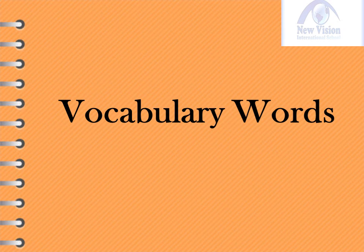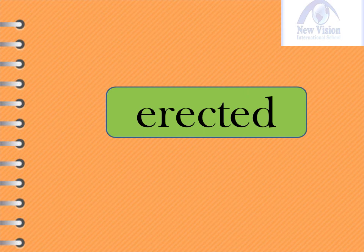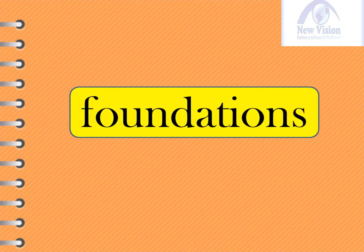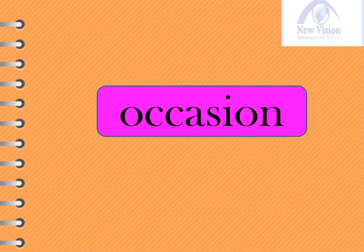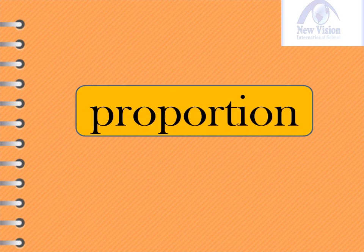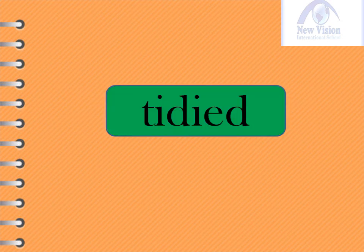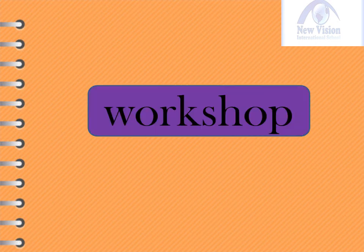Now that we know the elements of the story, it is time to learn the new set of vocabulary words. Say the word after me. Our first word is 'erected.' Next: 'mold,' 'occasion,' 'proportion,' 'tidied,' and lastly, 'workshop.'